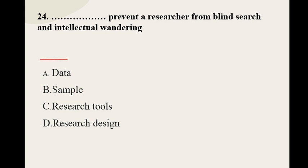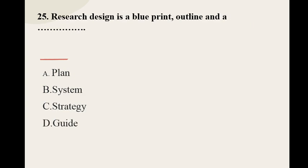Question number twenty-four: Dash prevents a researcher from blind search and intellectual wandering. Options are data, sample, research tools, and research design. The correct option for question number twenty-four is research design. Question number twenty-five: Research design is a blueprint outlined and a dash. Options are plan, system, strategy, and guide. The correct option for question number twenty-five is plan.